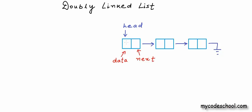Let's say we have a linked list of integers here, so I'll fill in some values in the data field of each node. Let's assume that these nodes are at addresses 200, 250, and 350 respectively. I'll also fill in the address field in each node. The address field in the first node will be the address of the second node, which is 250. The address field in the second node will be the address of the third node, which is 350, and the address part in the third node will be 0 or null. The identity of a linked list that we always keep with us is the address of the head node, or reference to the head node.